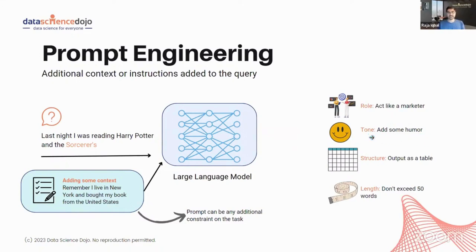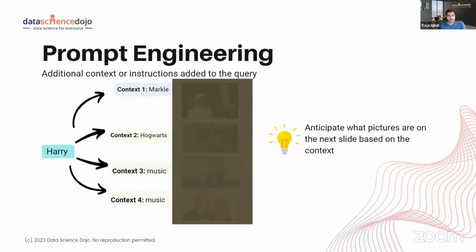For example, if you add 'some humor,' it will start injecting humor in appropriate places. This is why prompt engineering is important, and from my experience, prompt engineering is by far the most important aspect of building an LLM application.